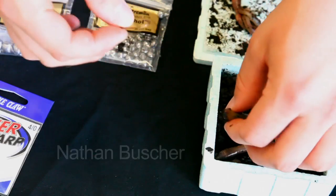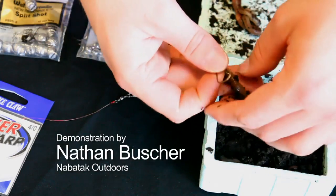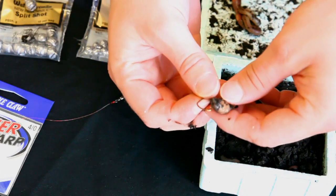When baiting up a nightcrawler onto a regular hook, it's best to go ahead, in my opinion, to start at one end.